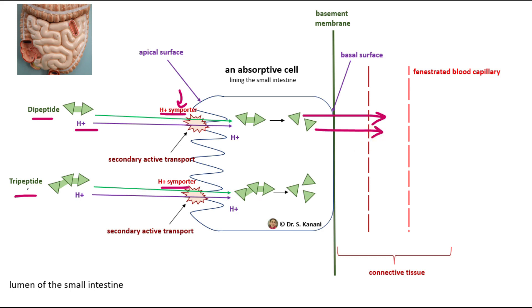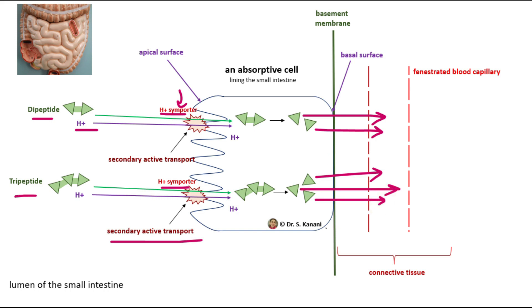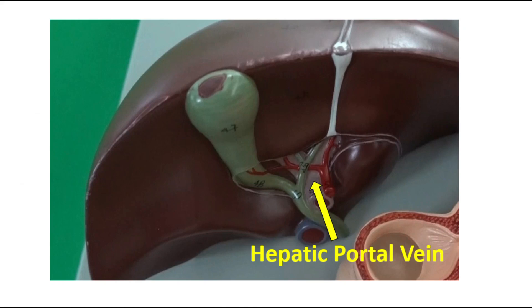Tripeptide absorption follows the same mechanism. On the apical surface, a hydrogen ion symporter transports a tripeptide and a hydrogen ion into the cell — secondary active transport. Inside the cell, the tripeptide is broken down into three amino acid molecules, which are then absorbed into the blood capillary in the connective tissue by facilitated diffusion.